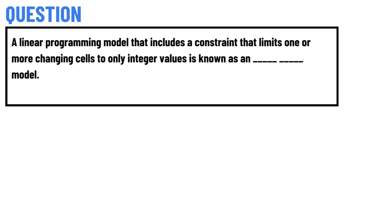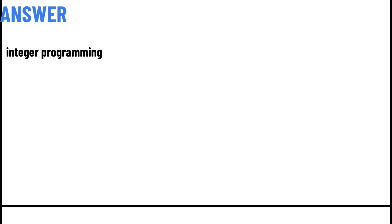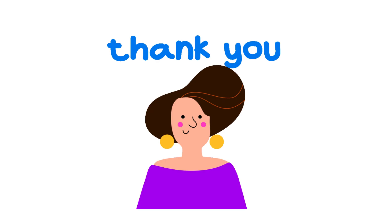Today's question: a linear programming model that includes a constraint that limits one or more changing cells to only integer values is known as what model? The correct answer is integer programming.